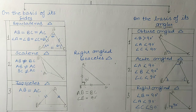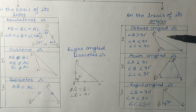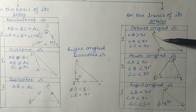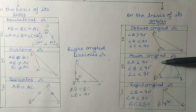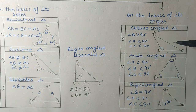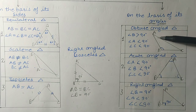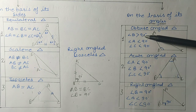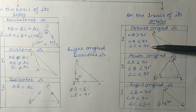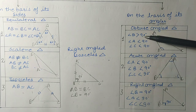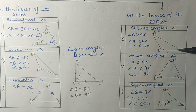On the basis of angles, we have obtuse angle, acute angle, and right angle. An obtuse angle is when an angle measures greater than 90 degrees. In an obtuse angle triangle, one angle is greater than 90 degrees and the other two angles are acute angles.